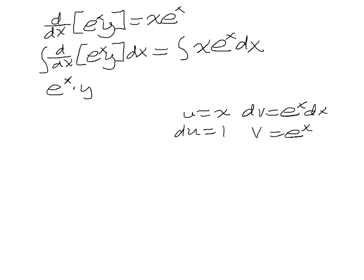So I end up with x. So that's uv minus the integral of v. This should be a dx. du, dx. So this equals x e to the x minus the integral of e to the x is just e to the x. And then plus c.